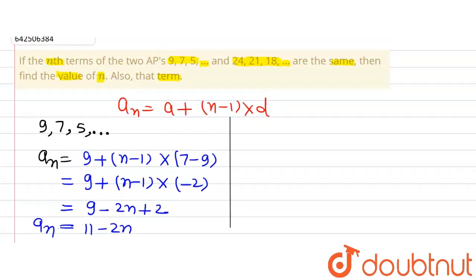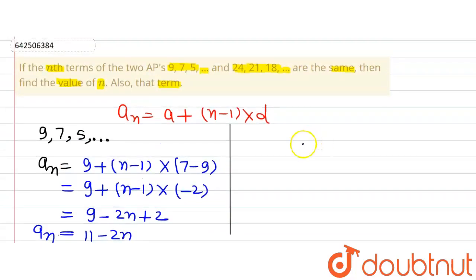Now we'll find the nth term of the other AP. The other AP is 24, 21, 18, and so on.